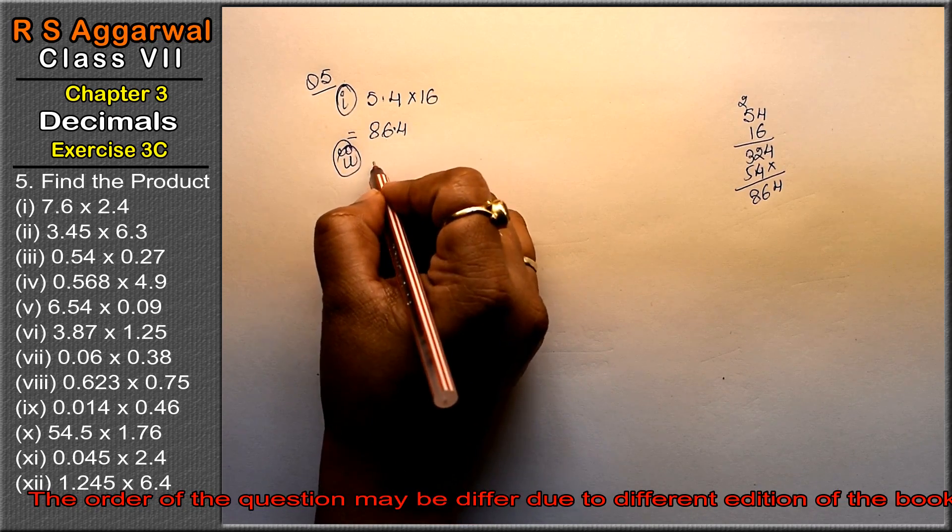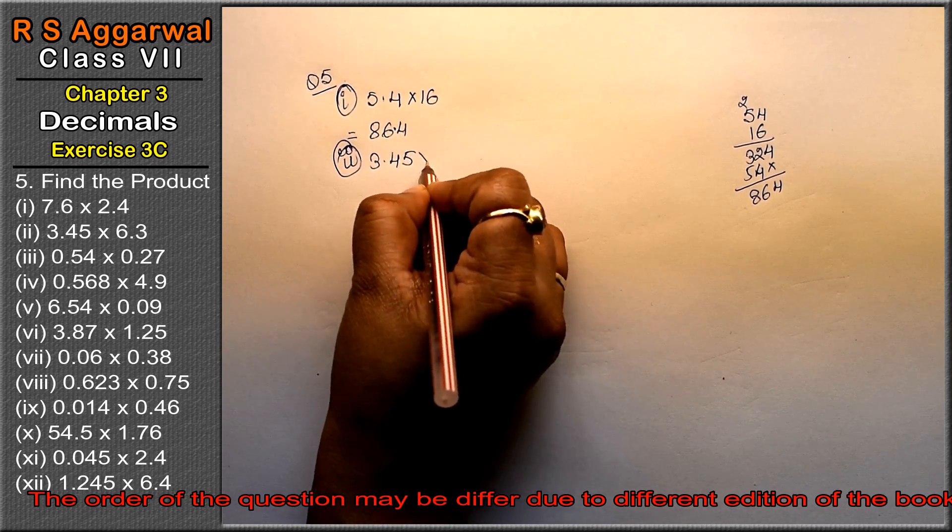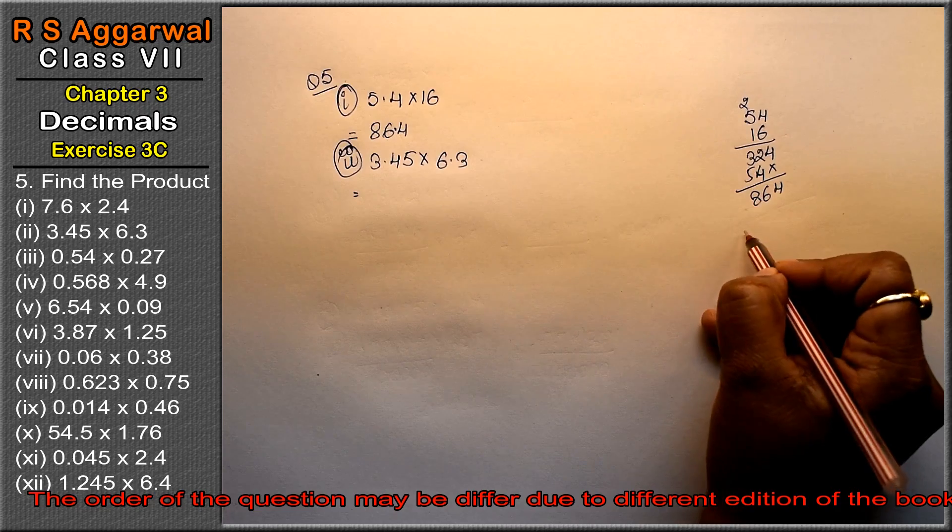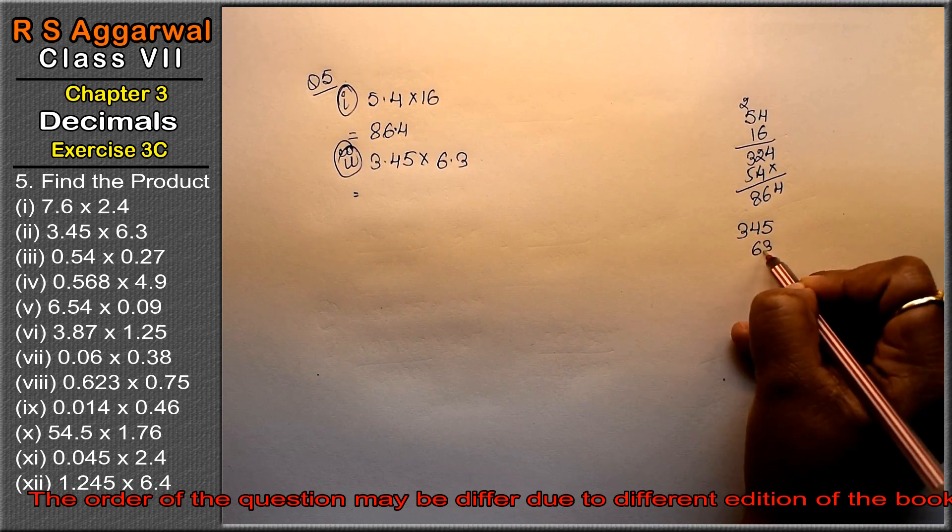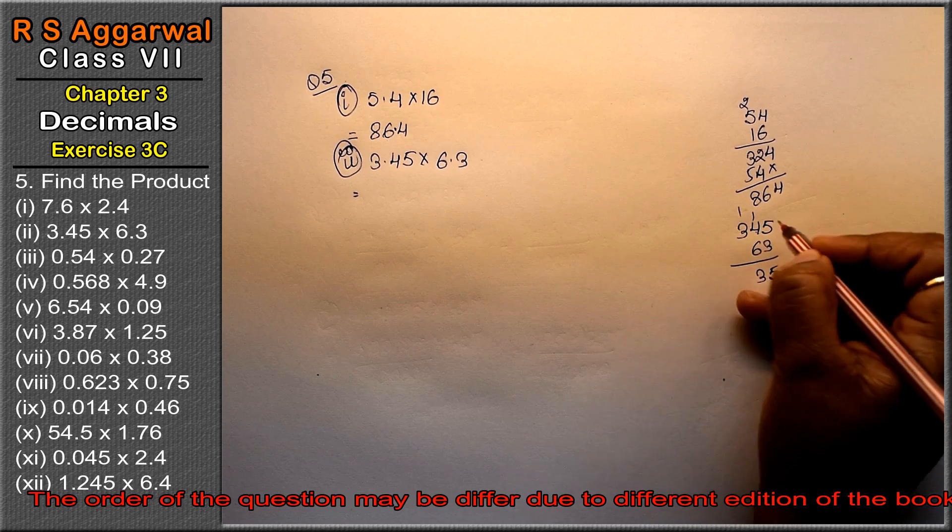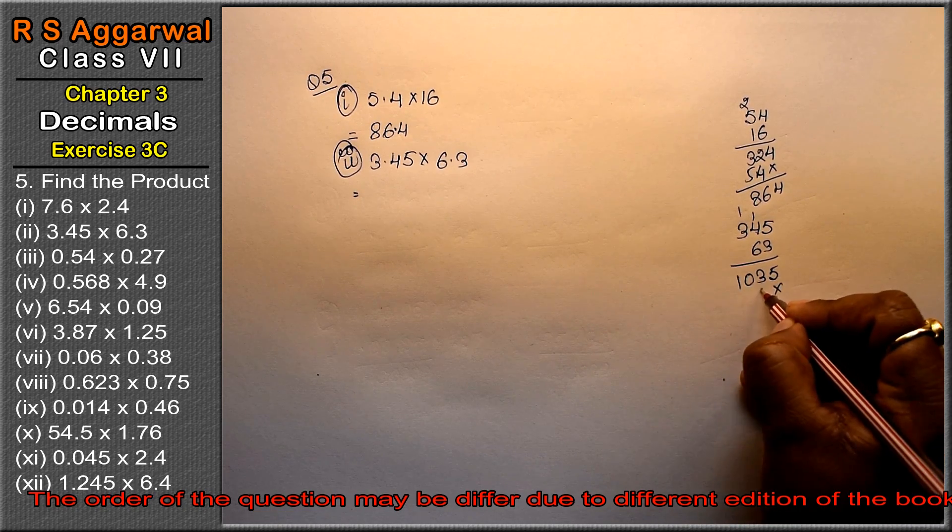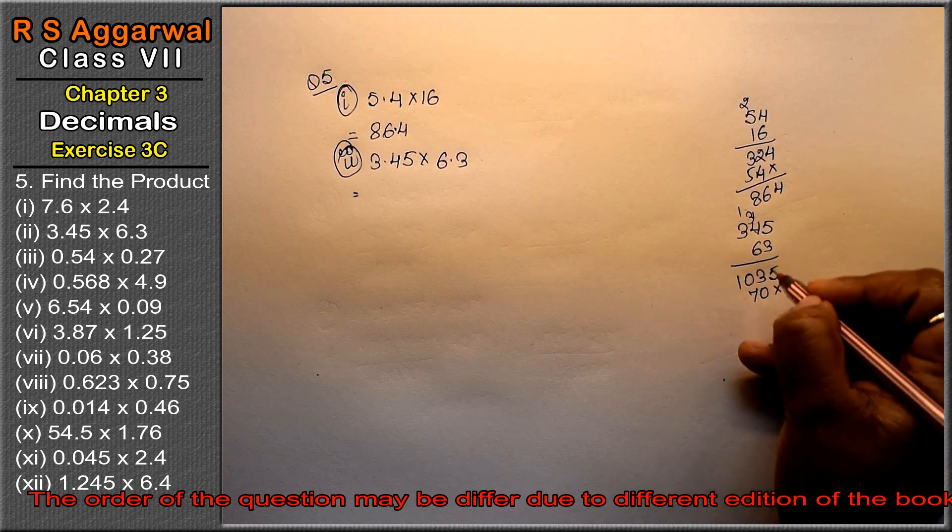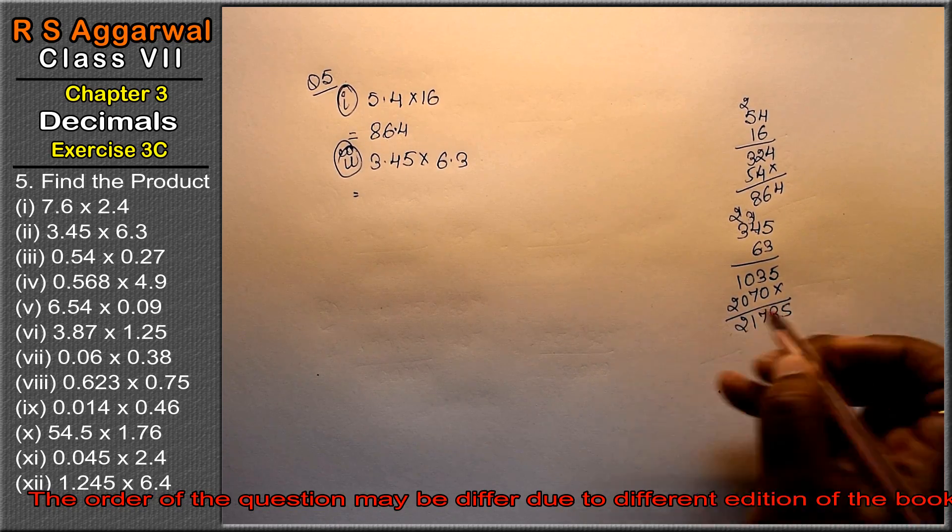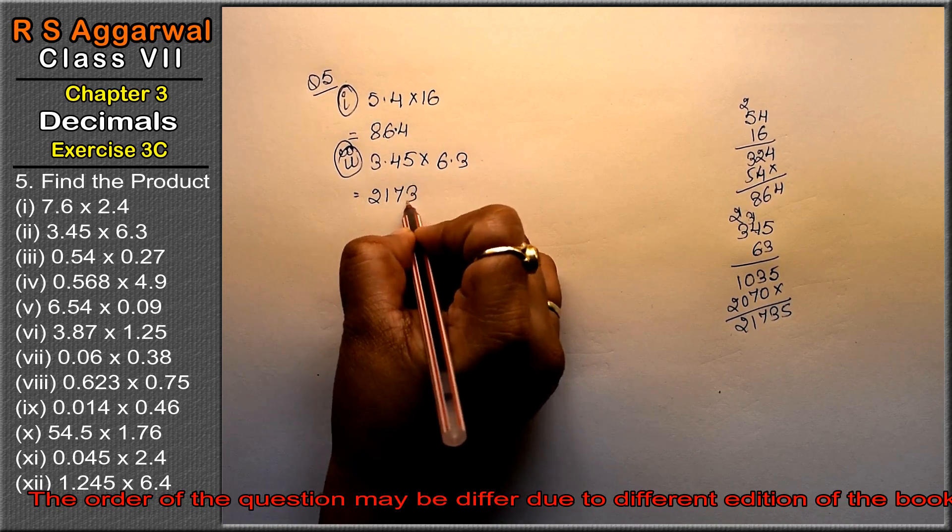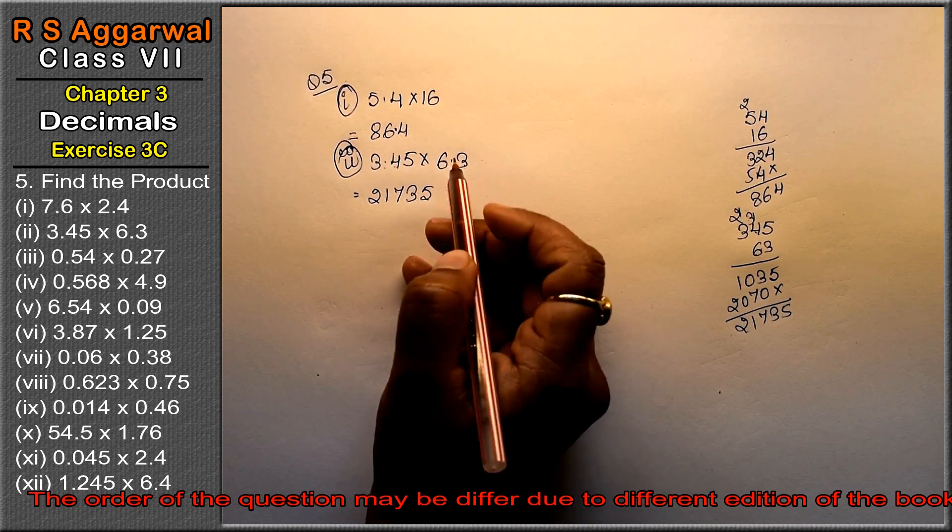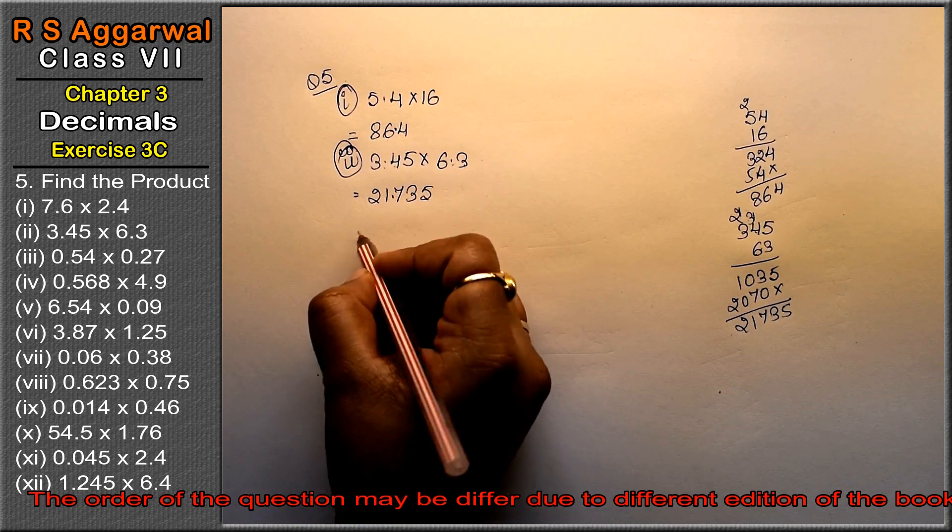Let's do second part: 3.45 into 6.3. We do it without points - 345 and 63. Multiply: 3 times 5 is 15, 3 times 4 is 12 and 13, 3 times 3 is 9 and 10. Then 6 times 5 is 30, add and get 21735. Now see, this point is 1, this point is 1, total 2. Count 2 decimal places from the right, so 21.735 is the answer.